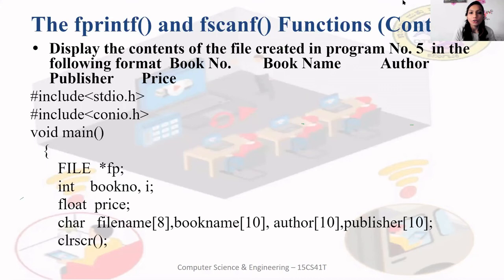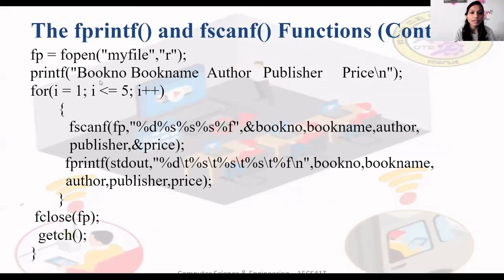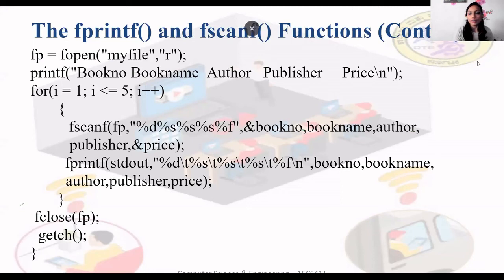To display the records, open the same file again in read mode using the file pointer. Use a for loop, read from the file using fscanf, and display each record on the output screen using printf. You read from the file and transfer to the output screen. Try these programs out to get a clear understanding.